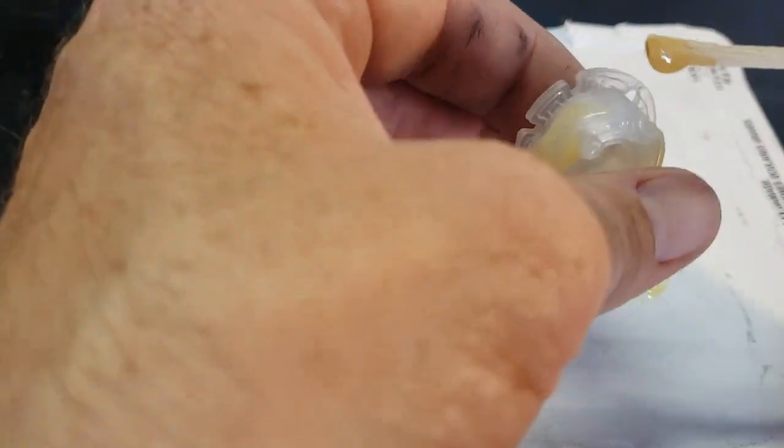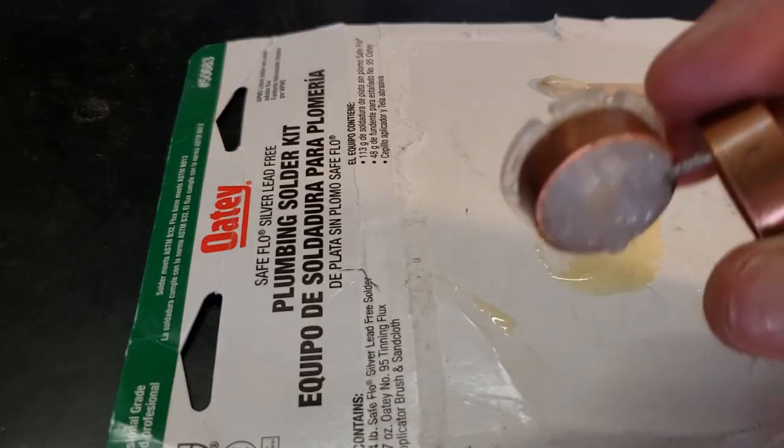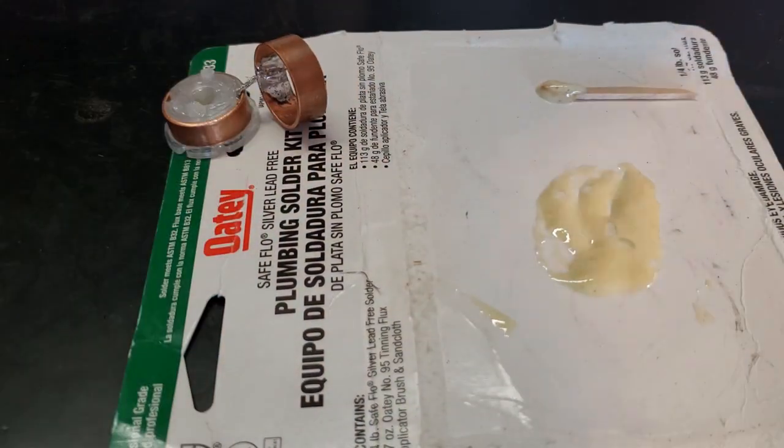Apply glue to the print, then slip the first ring over. Be sure to clean up the excess glue. Do the same to the other part.